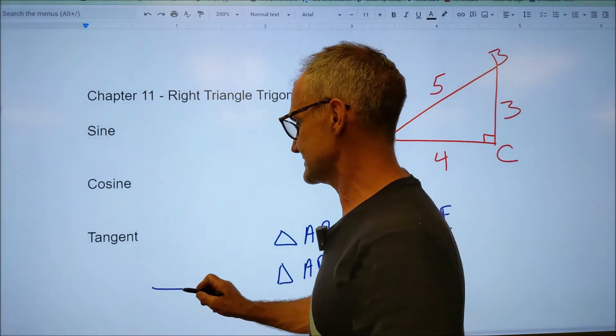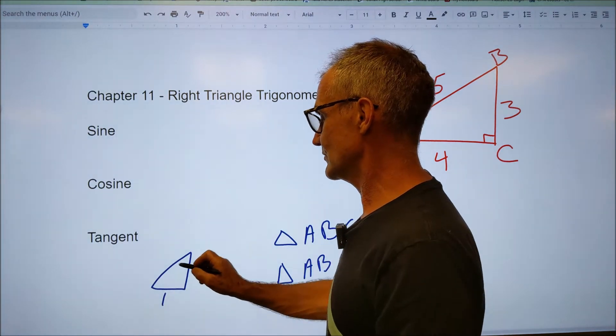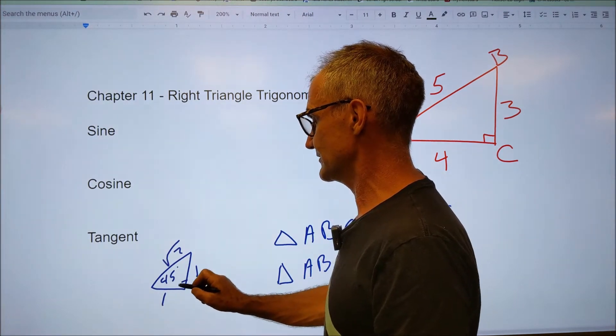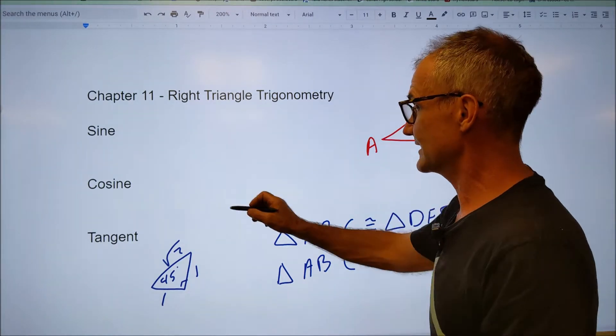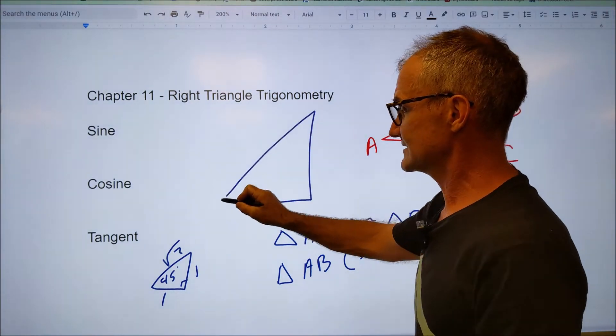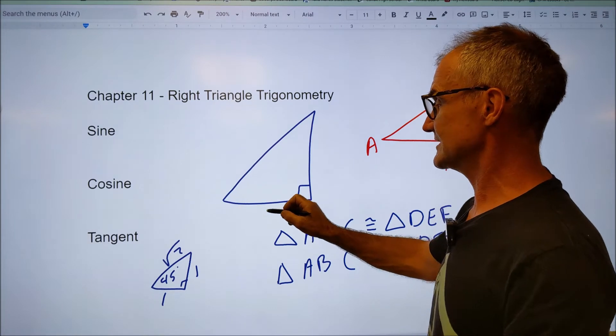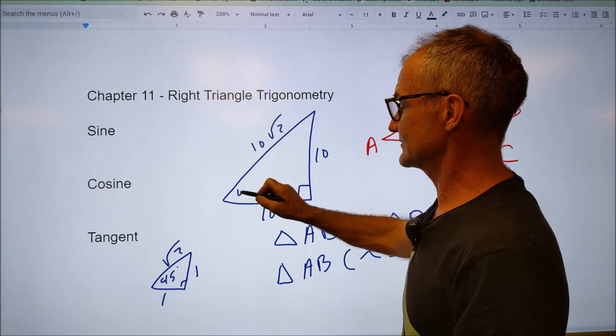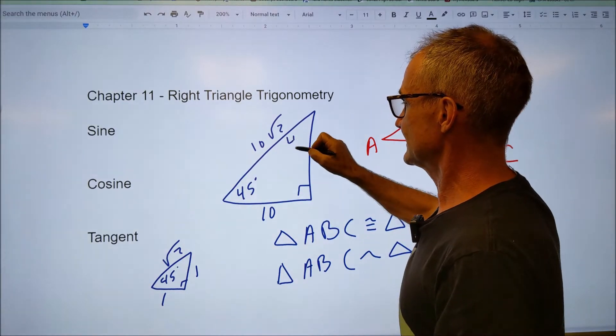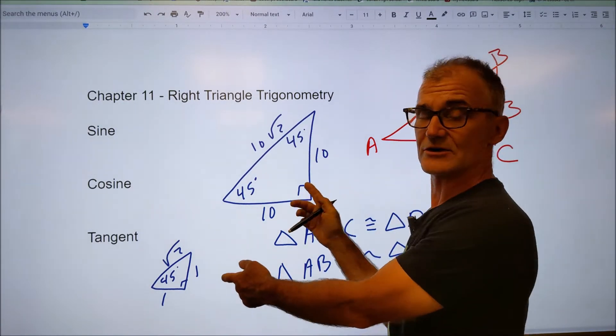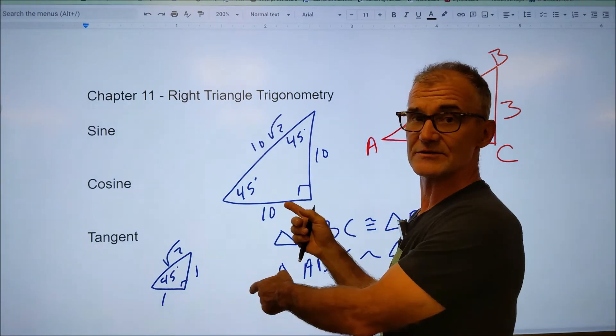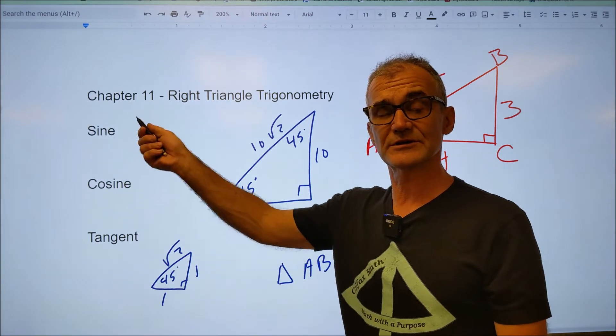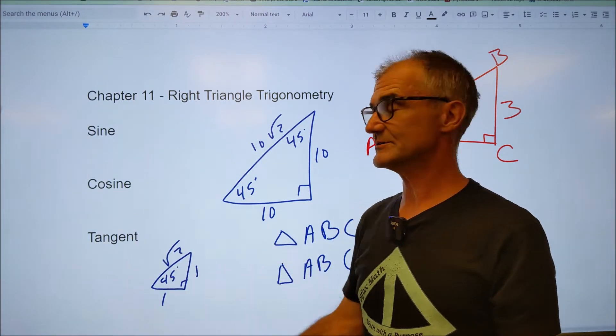So I could have an isosceles right triangle like this, where it's 1, 1, root 2, and the angles are 45 degrees and 45 degrees and 90, or I could have another isosceles right triangle where the side is 10, 10, 10 root 2, and the angles are 45 degrees still, and these two triangles are called similar because the angles are the same and the ratios of sides are the same. And that's what these three words are going to mean. They're going to mean the ratio of sides.